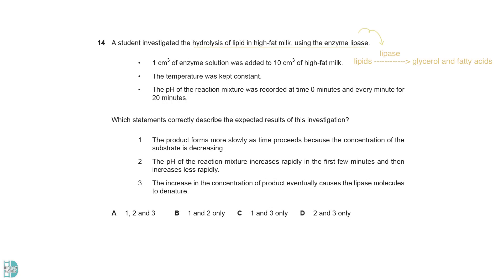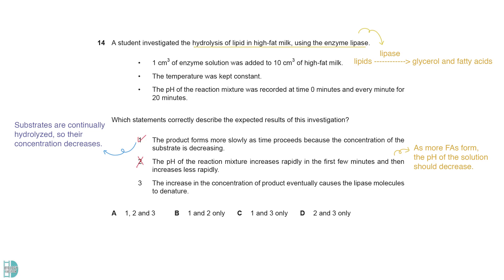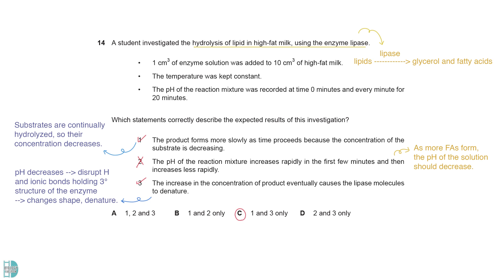When lipids are hydrolyzed by lipase, glycerol and fatty acids are formed. 1 is correct as substrates are continually hydrolyzed, so their concentration decreases. 2 is wrong. As more fatty acids form, the pH of the solution should decrease. 3 is correct because the reduction in pH may disrupt the hydrogen and ionic bonds holding the tertiary structure of the enzyme. This causes the enzyme to change shape and denature.